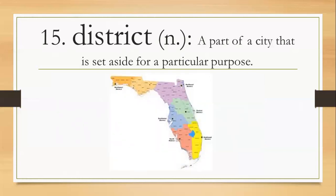Number fifteen, district, D-I-S-T-R-I-C-T, district. It's a noun, a part of a city that is set aside for a particular purpose. This is the Florida state, and the Florida state is being divided by districts. That's why you see like a yellow color, orange color, purple color. Those are called districts, that division.